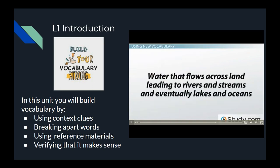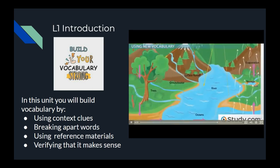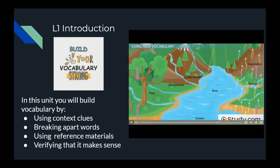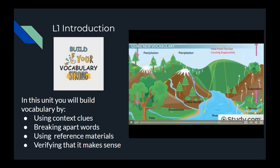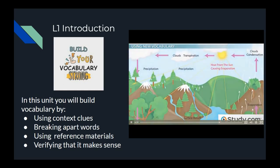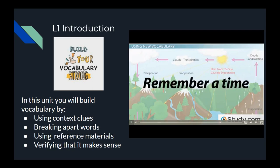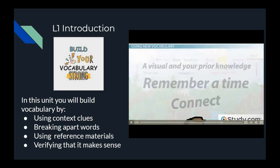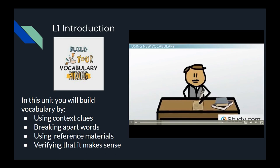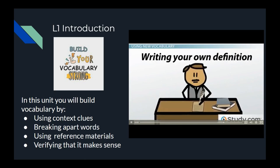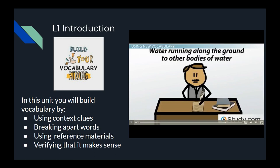Water that flows across land leading to rivers and streams and eventually lakes and oceans. Okay, let's picture water running across a playground, down a hill, and into a stream. Now you can remember a time when you saw water running along the ground. That is how we can connect the word 'runoff' to a visual and your prior knowledge. The next step to solidifying a word into your memory bank is writing your own definition. Let's put runoff into our own words: water running along the ground to other bodies of water.